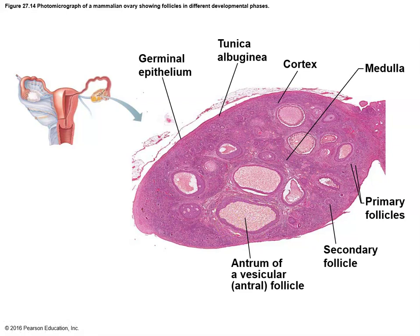The point is that ovaries contain all the eggs, and all of the eggs that a female ever produces are produced before she's born. A male doesn't start producing sperm until the onset of puberty, but a female produces all the eggs before birth, and probably 75% of those eggs die before the female baby is born. We're talking millions and millions of eggs made, with only perhaps a couple million present at birth, and by the time the female enters puberty there may only be a couple hundred thousand eggs left.